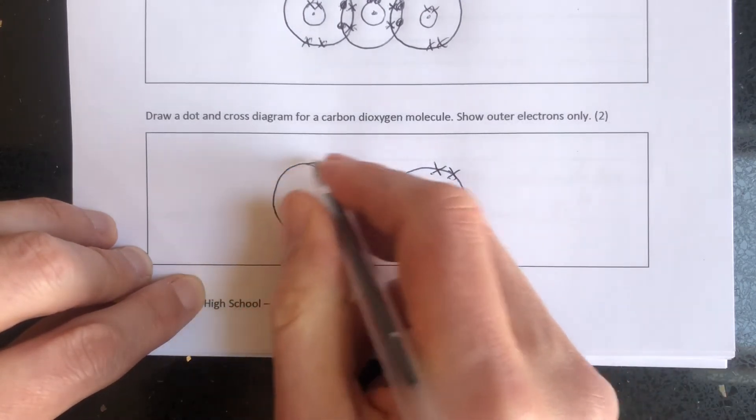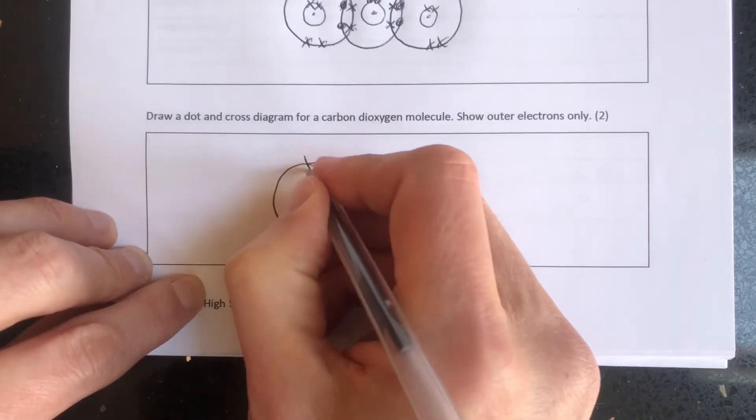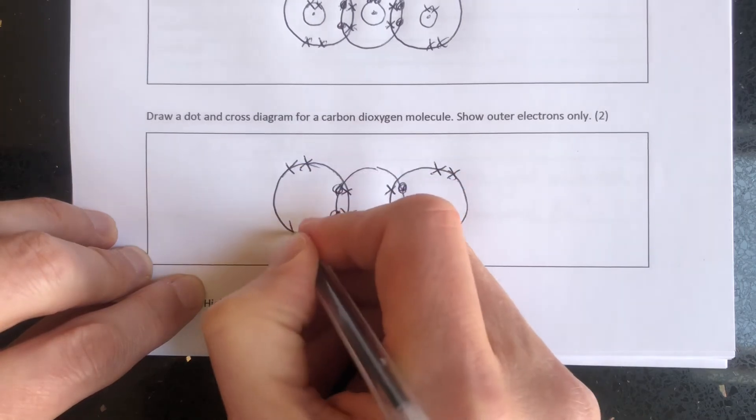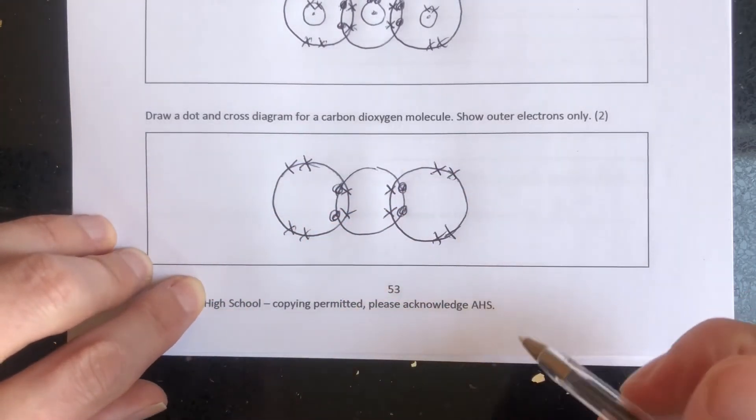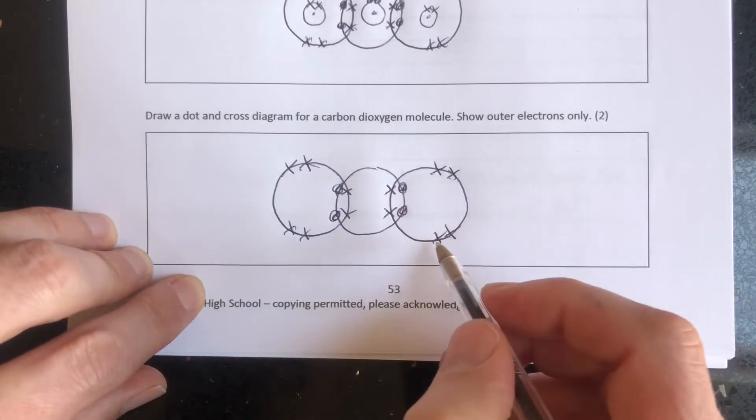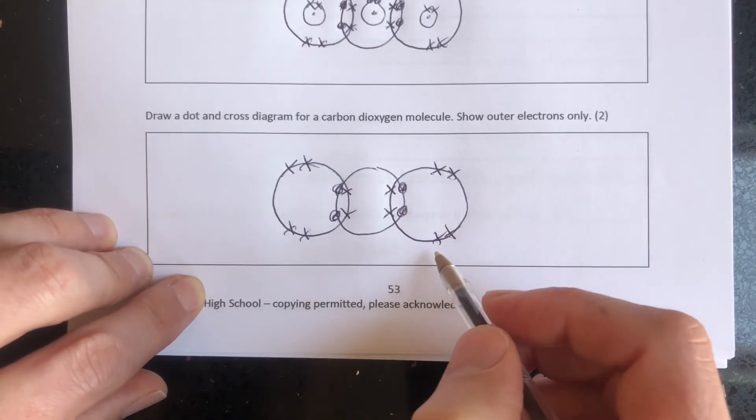Two of the six electrons in this oxygen in the overlap, so there's three, four, five, six. Now I've done that, make sure we count up to check we've got eight electrons on every atom, on the outer shell of every atom.